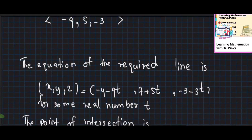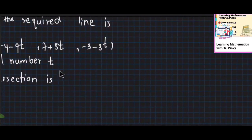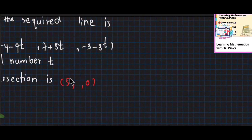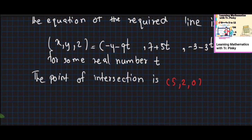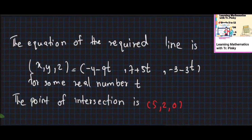So I'm going to go into intersection. The intersection point is 5, 2, 0. XYZ mapped to that point. So this is what you're doing — going into the equation.